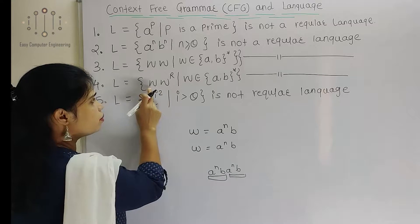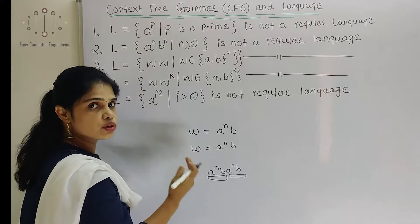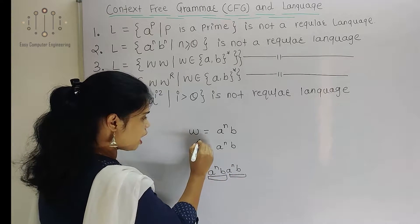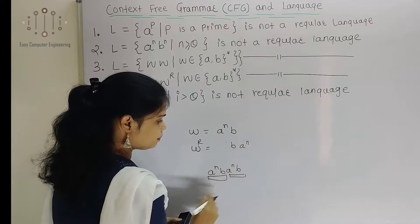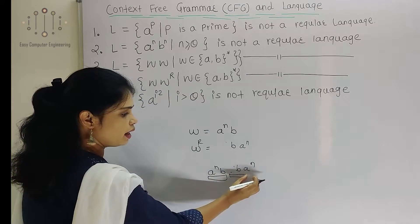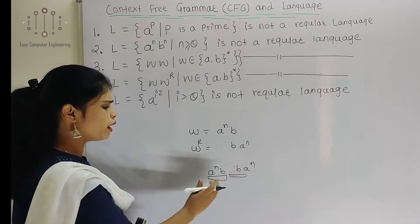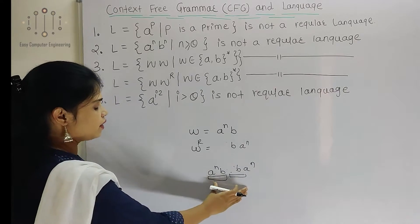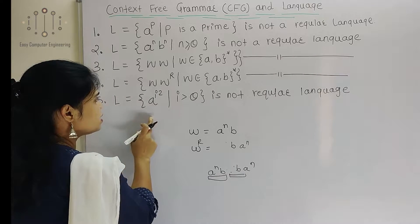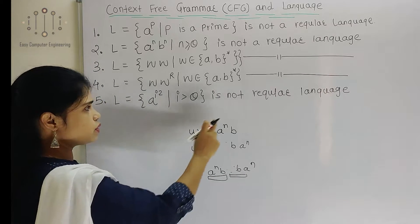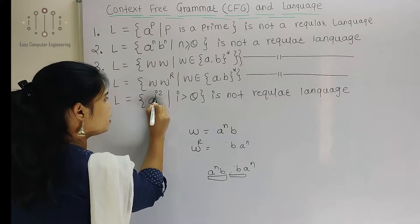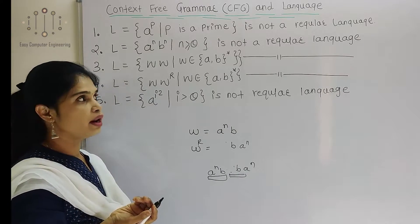One more language is W W raised to R, where W raised to R means the reverse of W. Suppose W is A raised to N, B, then W raised to R will become B, A raised to N. So our language will become A raised to N, B, B, A raised to N. Again, this is not a regular language which we cannot represent with finite automata. One more language is A raised to I squared, where I is greater than 0 — this is also not a regular language, because we need to store I again.